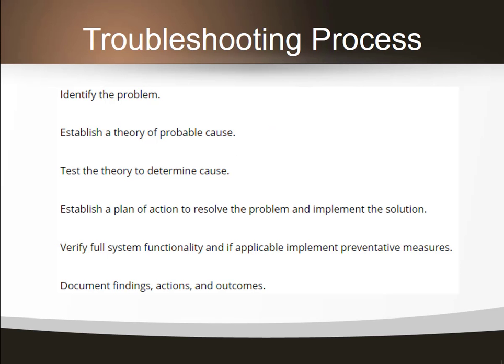Sometimes hardware goes bad, so how do we approach a hardware problem? For the IT world we have a six-step troubleshooting process. Step one: identify the problem. Step two: establish a theory of probable cause. Step three: test that theory to determine the actual cause. Step four: establish a plan of action to resolve the problem and implement your solution. Step five: verify that the solution worked and that full system functionality has been restored.